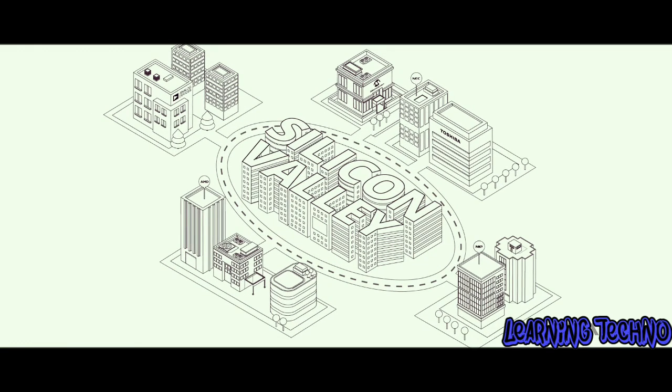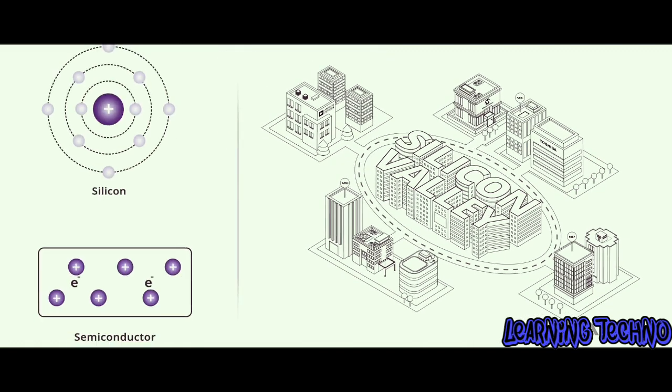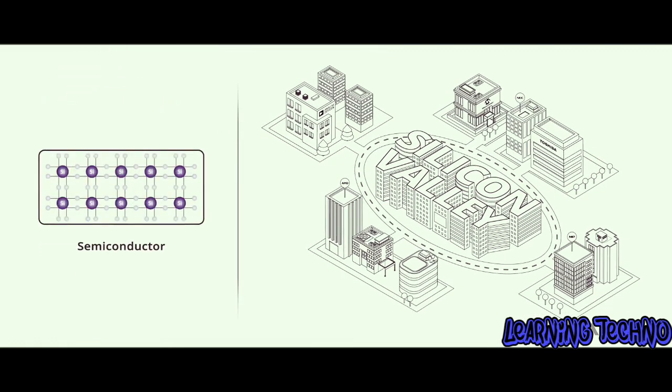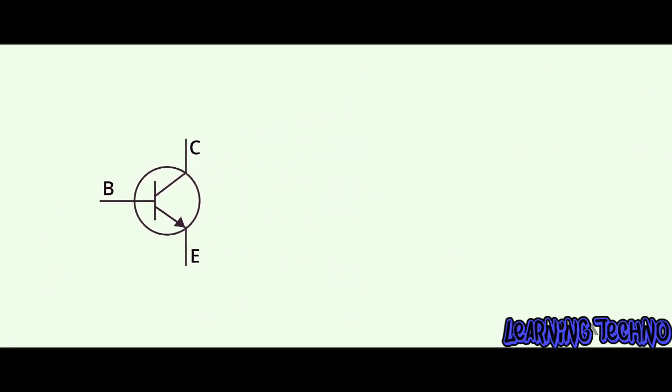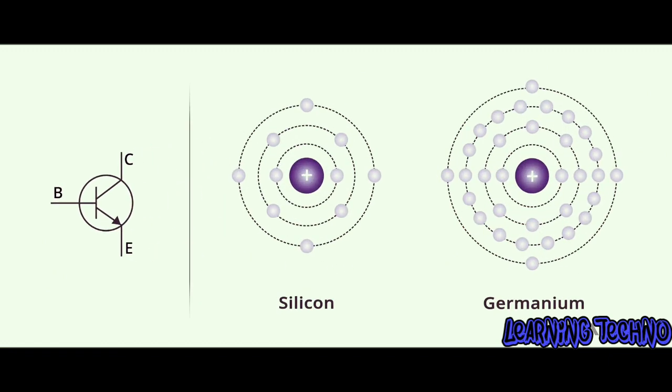Everybody has heard of Silicon Valley. Silicon is a semiconductor, and Silicon Valley is the home of a large number of inventors and manufacturers specializing in silicon-based transistors and integrated circuit chips. The majority of transistors are made of silicon. A small percentage of transistors are made from germanium, which is another semiconductor material.